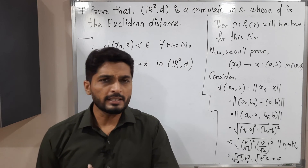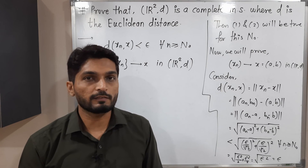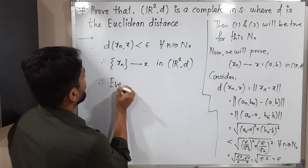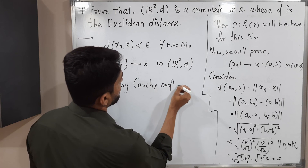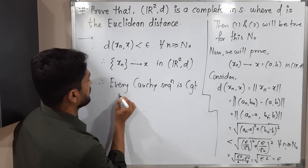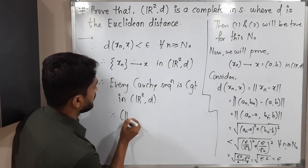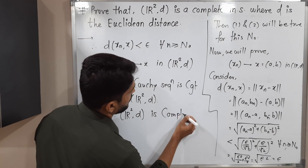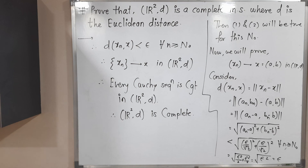We started with any arbitrary Cauchy sequence in (ℝ², d) and proved it is convergent. Therefore every Cauchy sequence is convergent in (ℝ², d), which is the definition of a complete metric space. Therefore (ℝ², d) is complete. We will meet in the next video — thank you.